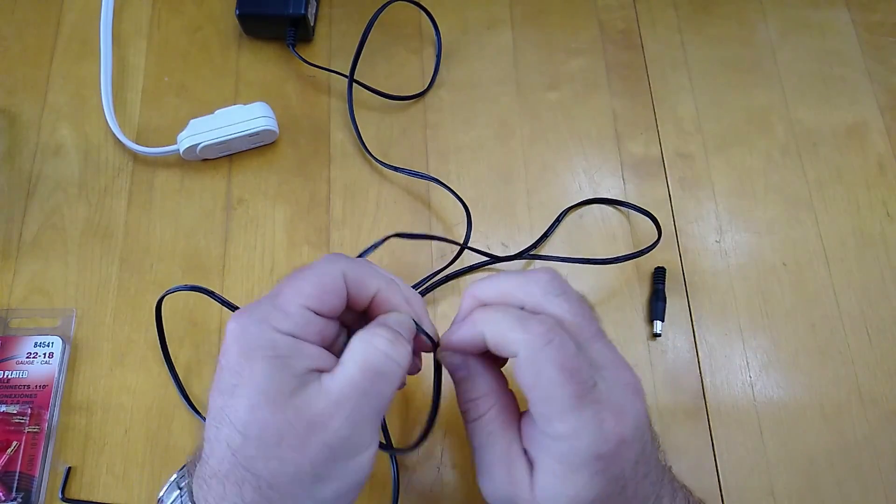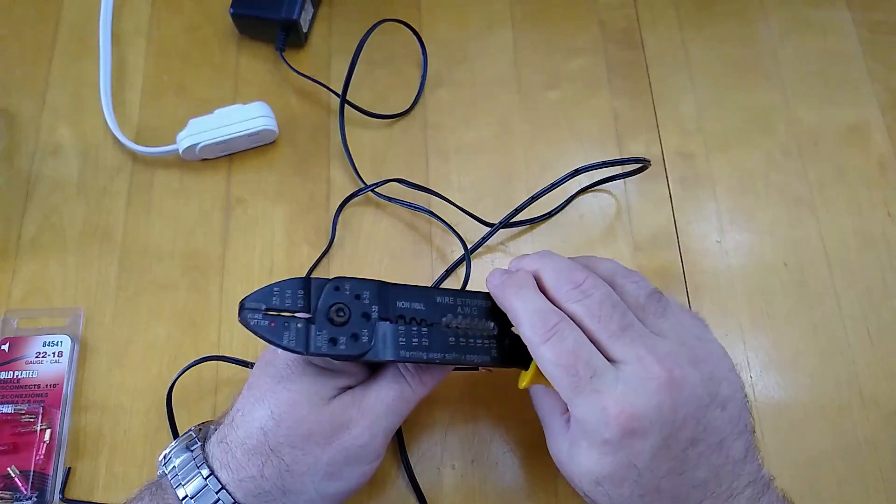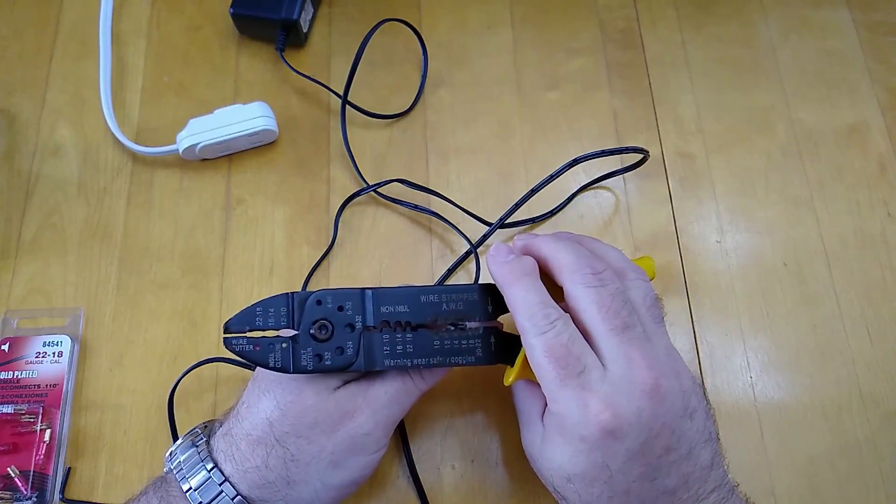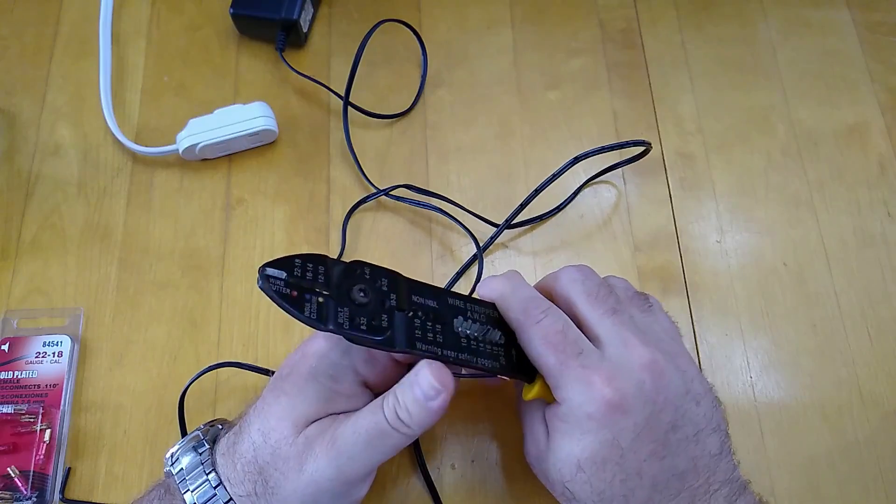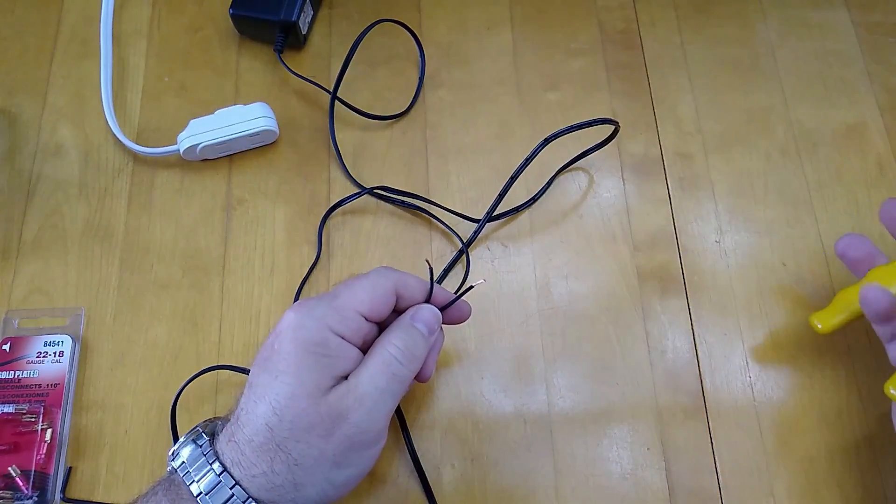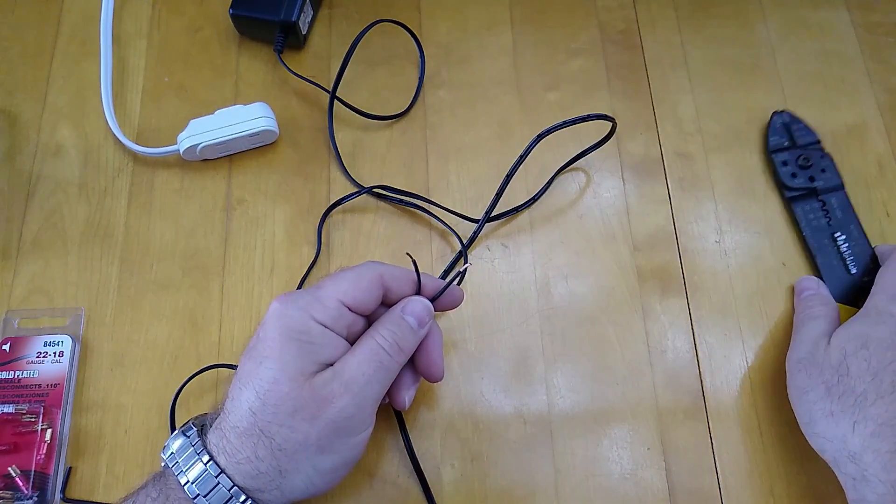I'm going to strip those back using an inexpensive wire stripper crimper tool. You can use it to strip wires and you can also use that same tool to crimp a terminal. I'm going to strip these wires back somewhere around a little less than a quarter of an inch.